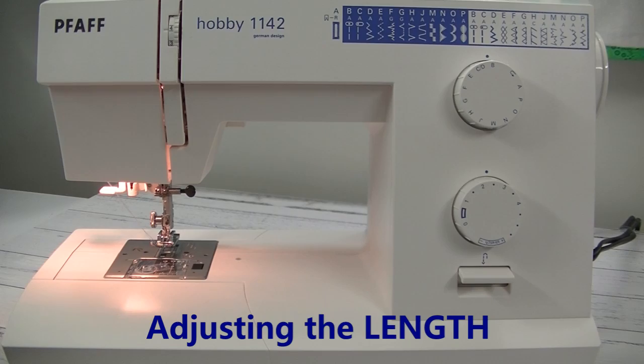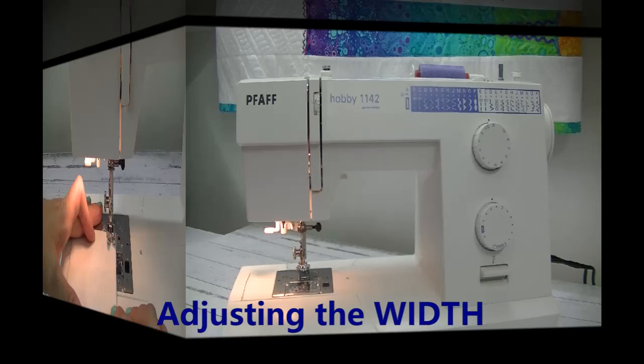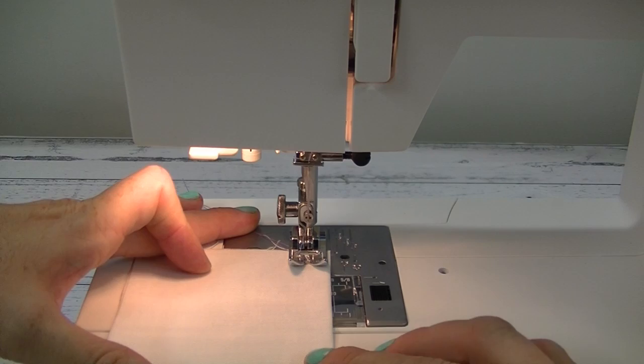The width setting on your machine is the very top dial. In this case here, it is on five. That indicates your needle is in the center position. To start sewing, hold your threads at the back of the machine. Push down on the presser foot and away you go.